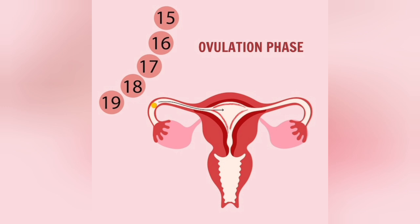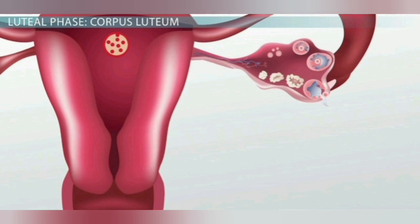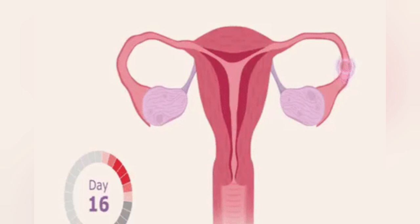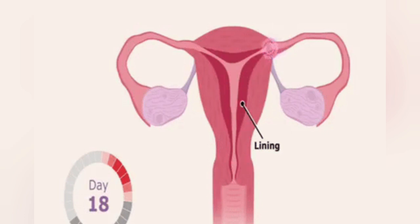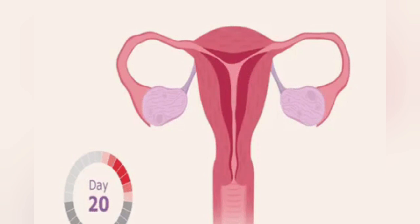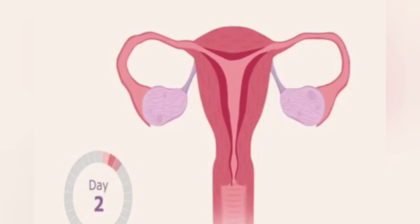The luteal phase lasts from about day 15 to day 28. The egg leaves the ovary and begins to travel through the fallopian tube to the uterus. The level of the hormone progesterone rises. If the egg becomes fertilized by sperm and attaches itself to the uterine wall, implantation occurs and pregnancy begins.